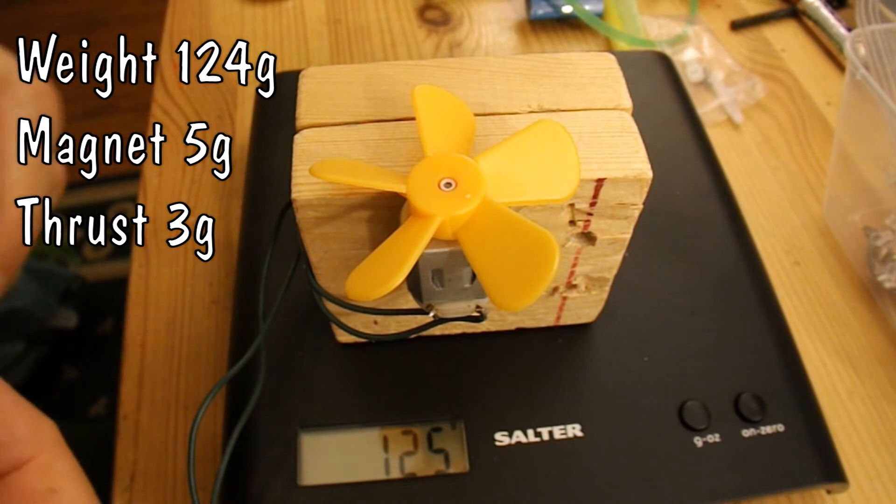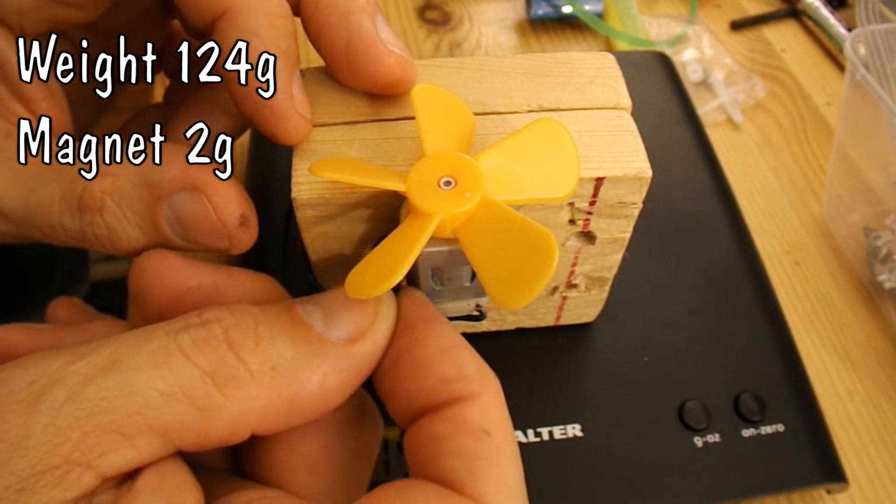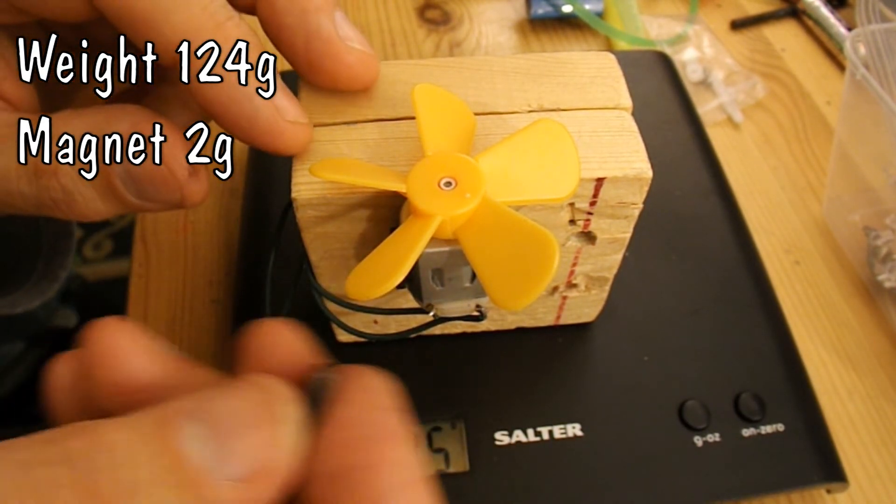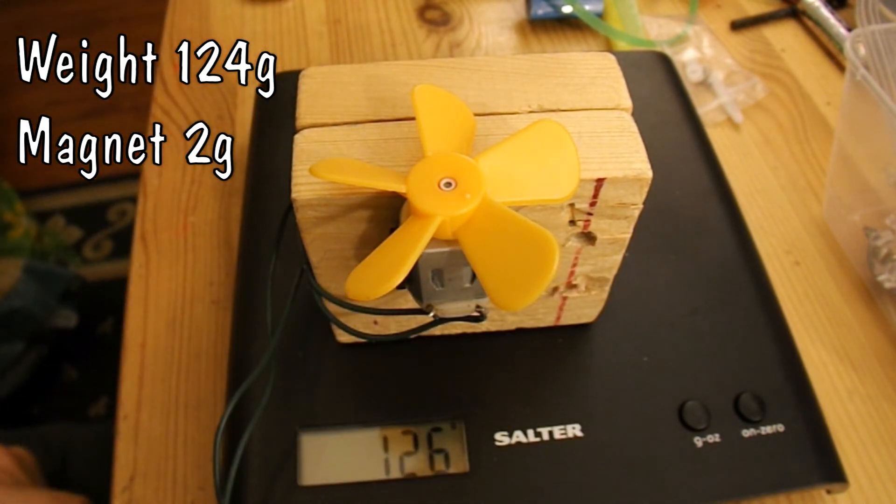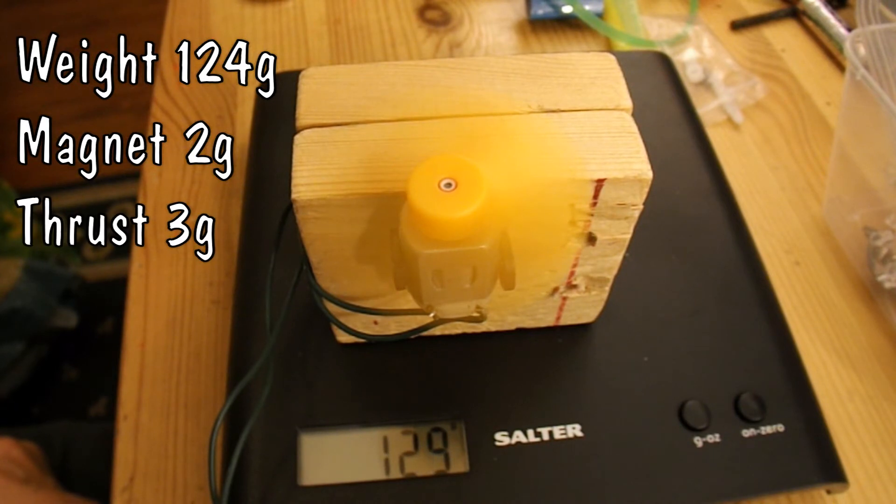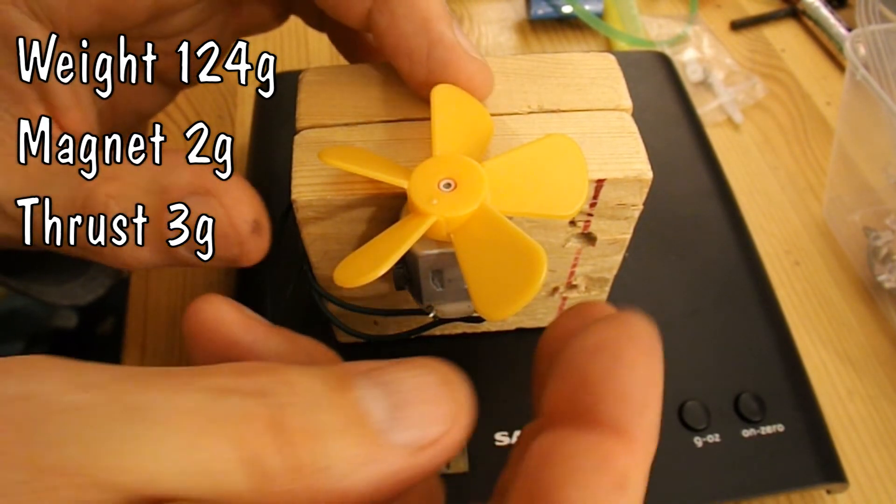I've got some different magnets here. Are they called ferrite? I can't remember. Let's try them. So 126 grams. If we're generous we say it went up to 129. So no difference, three grams of thrust.